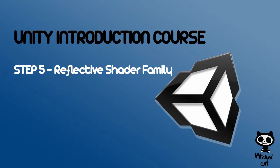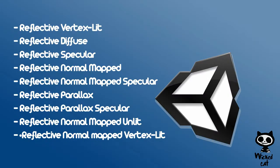Step 5: Reflective Shader Family. This shader family includes: Reflective Vertex Lit, Reflective Diffuse, Reflective Specular, Reflective Normal Mapped, Reflective Normal Mapped Specular, Reflective Parallax, Reflective Parallax Specular, Reflective Normal Mapped Unlit, and Reflective Normal Mapped Vertex Lit.